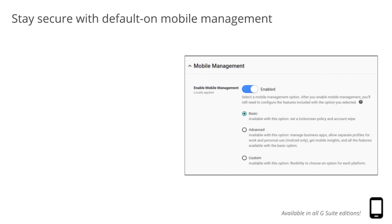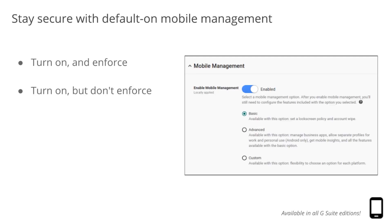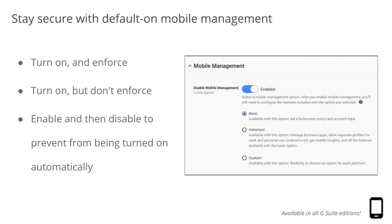We recently introduced several new features for G Suite to help keep your data secure, which includes having basic mobile management automatically turned on for your domain by the end of the year. To control the timing of this change, you can do one of three things: turn on basic mobile management now and enforce a passcode; turn on basic mobile management now but don't enforce a passcode; or enable and then disable mobile management, which will prevent basic mobile management from being turned on automatically. For more information on Google Mobile Management and applying password settings for mobile devices, please visit the Help Center.